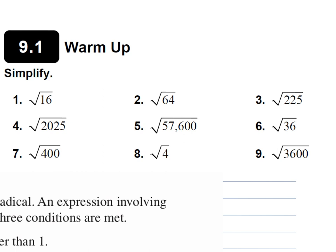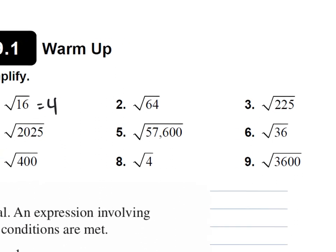Four. Very good. It is four. So, what it's asking for when you have the square root is what number times itself gives you that number underneath. Four times four gives me 16, so the answer is four.